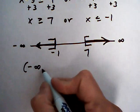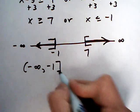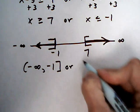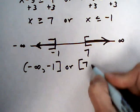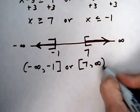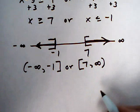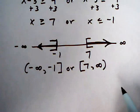Minus infinity, parentheses because we never reach it, to minus 1, bracket, or 7 to infinity. Another parentheses around the infinity. And that would be the interval notation answer.